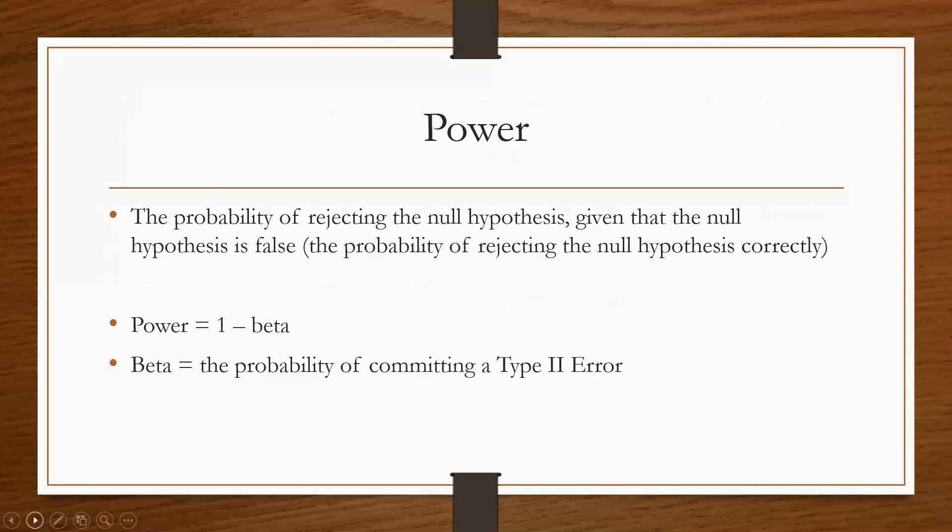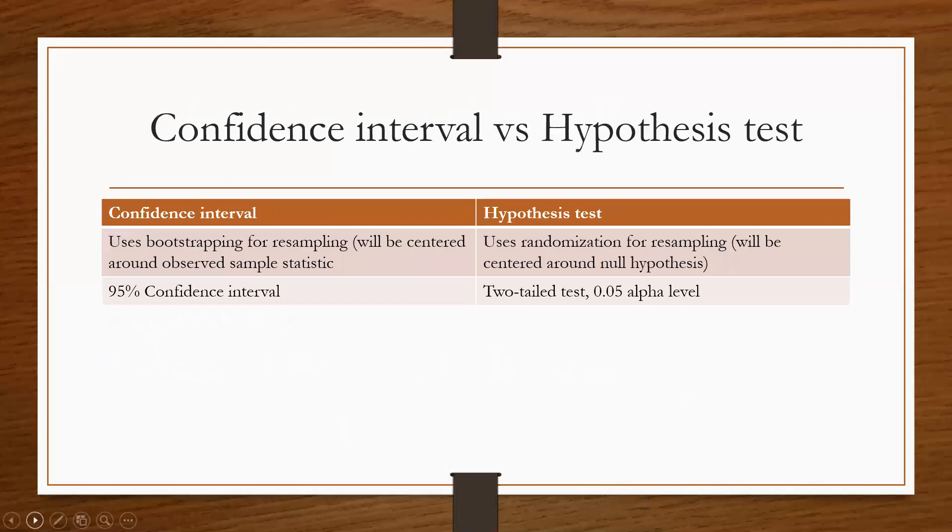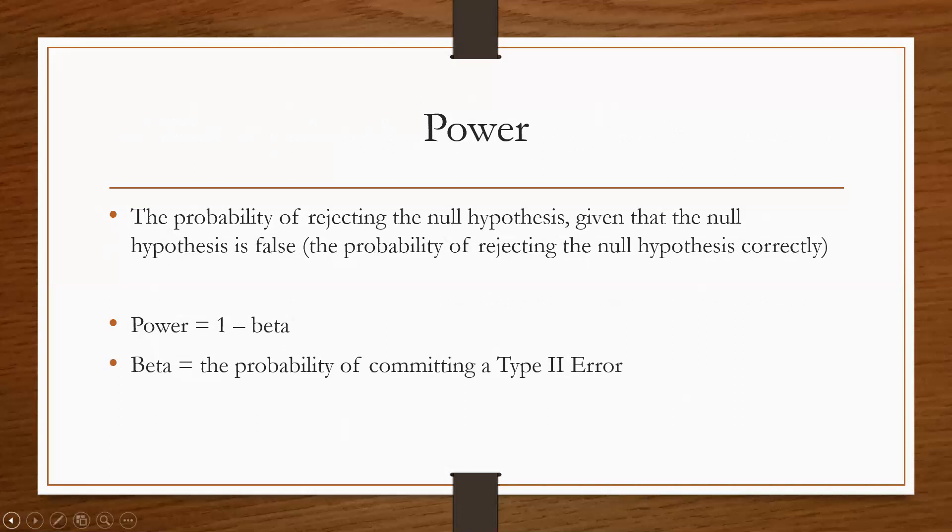Something else that you guys should know is power. What that is, it's basically in the simplest words, the probability of rejecting a null hypothesis correctly. The way you calculate that is power is 1 minus beta, would be 1 minus alpha if you're doing it for Type I, but it's the probability, you know, with beta being the probability of committing a Type II error. So just remember that equation, it's not too difficult.